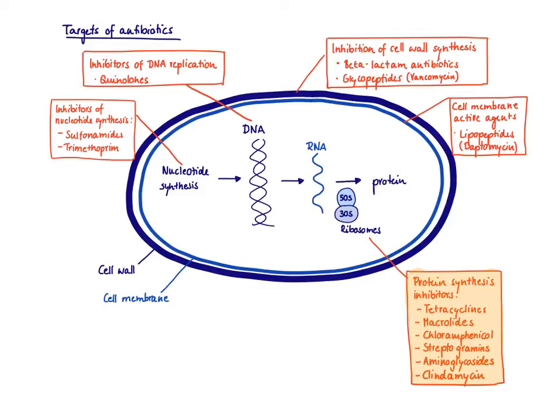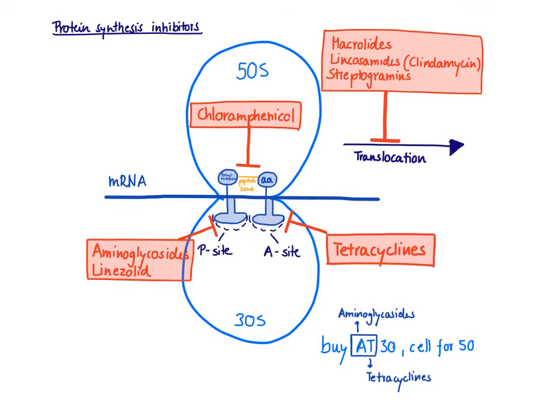The ribosomes are the workbench for protein translation. Remember, the ribosomes are different between prokaryotic and eukaryotic cells — different in size and chemical composition — and therefore an ideal target for antibiotics. We have a long list of drugs that all interfere with the ribosome at specific spots and therefore inhibit protein synthesis.